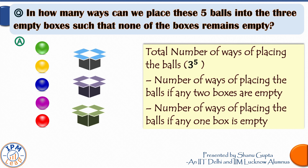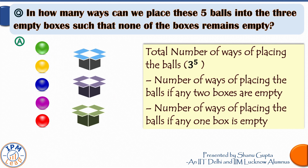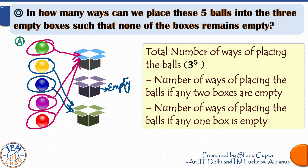Now we come to our main question: in how many ways can we place these five balls into the three empty boxes such that none of the boxes remains empty? It's possible that all balls might go into any one box leaving the other two empty, or all five balls might together occupy any two boxes leaving the third empty — for example, green, purple, and red balls in box one, yellow and blue in box three, and box two left empty. Our approach to solve this question is going to be very simple.